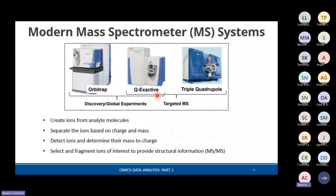There are different mass spectrometers available in the market used for various discovery and targeted mass spectrometric experiments. The basic function of a mass spectrometer in proteomics is to first create ions from the analyte molecules, which are peptides. Then the ions are separated based on their charge, detected based on the difference in mass-to-charge ratio, and then selected fragment ions provide structural as well as abundance information in an MS-MS system.